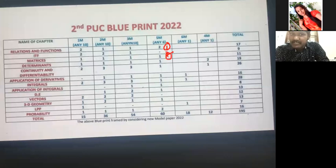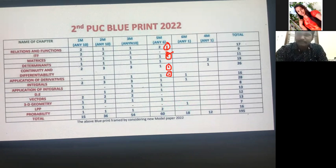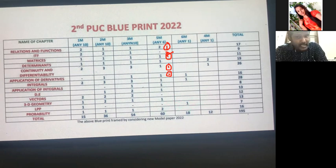Don't touch Determinants. Go with Differentiation — one question. Three questions completed. For Application of Derivatives, the sand pouring question or a similar compulsory question will come, so that's four questions completed. Next, if you are thorough with 3D Geometry, go with Geometry, or go with Probability — one compulsory question will come. That makes five questions completed.